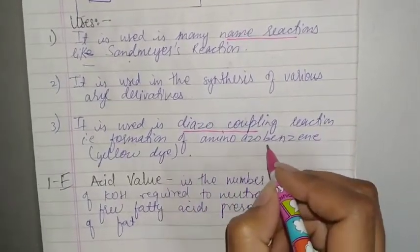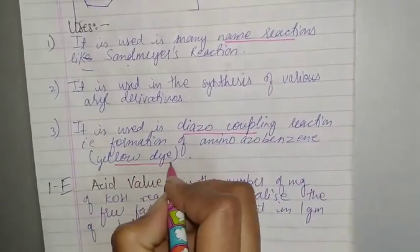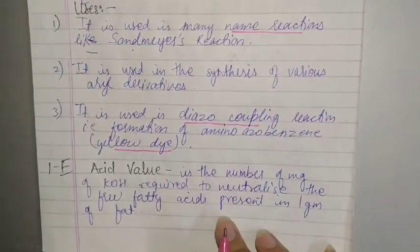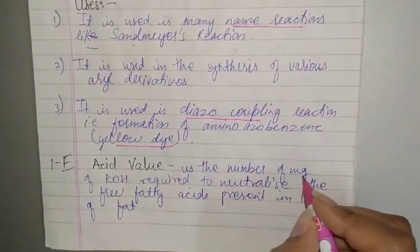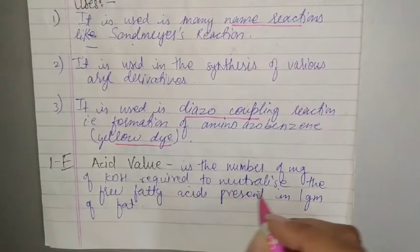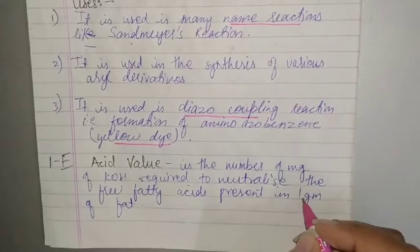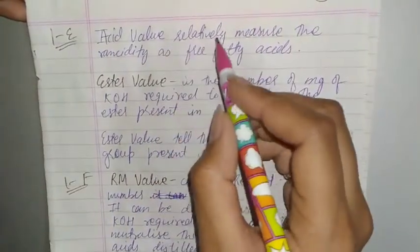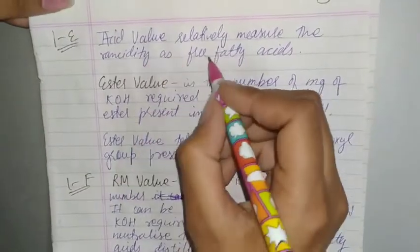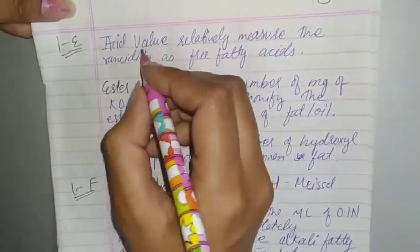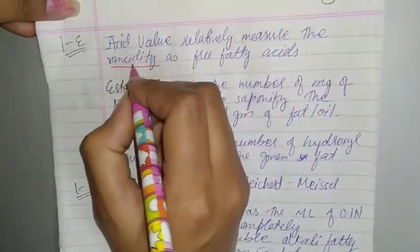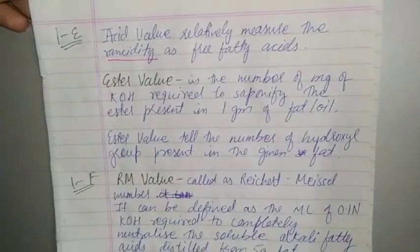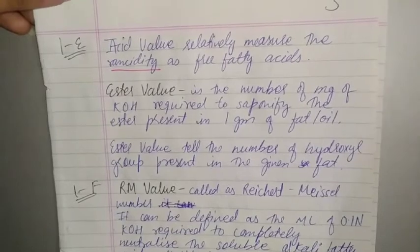Give the definition of acid value. It is the number of mg of KOH required to neutralize the free fatty acid present in one gram of fat. Acid value relatively measures the rancidity as a free fatty acid. It means that any oil or fat is getting spoiled and bad, that we explain as rancidity.